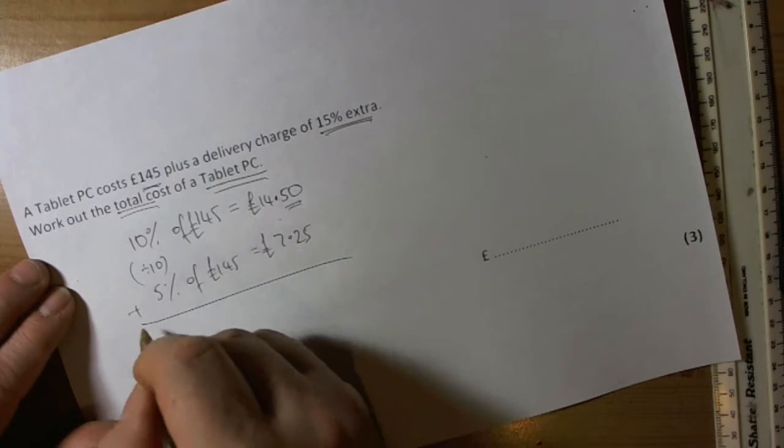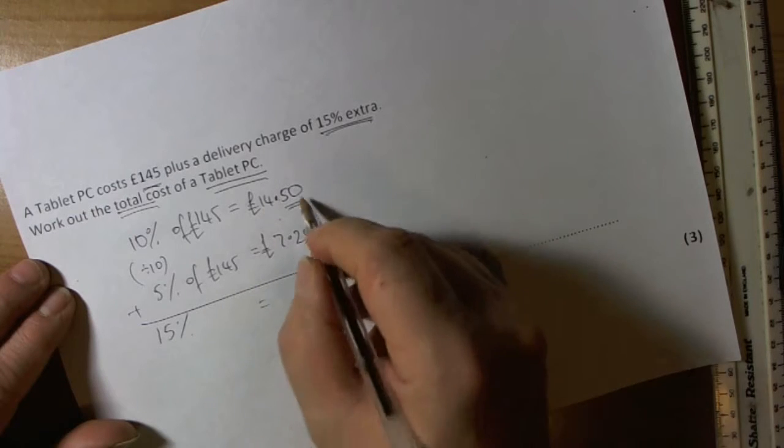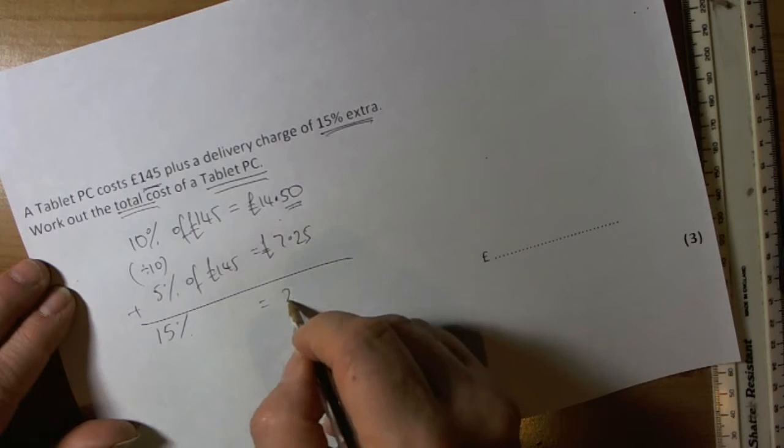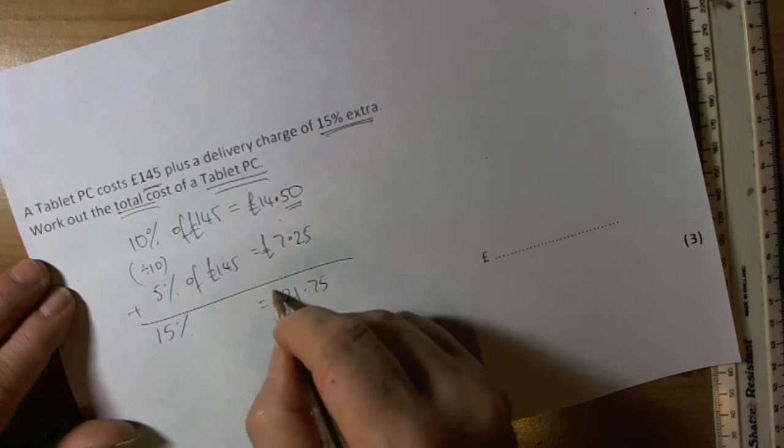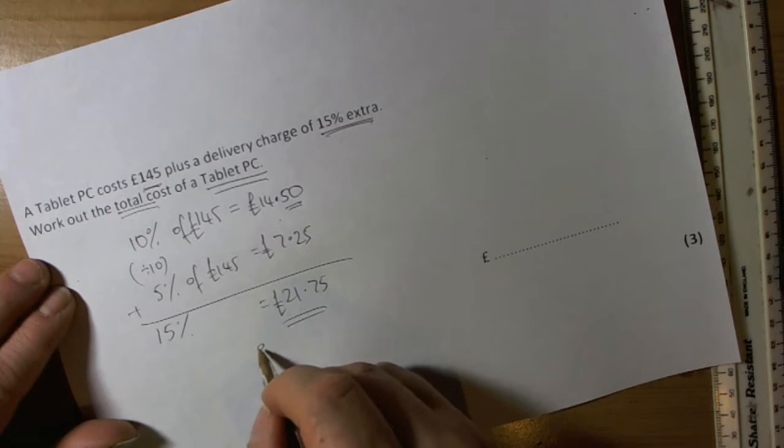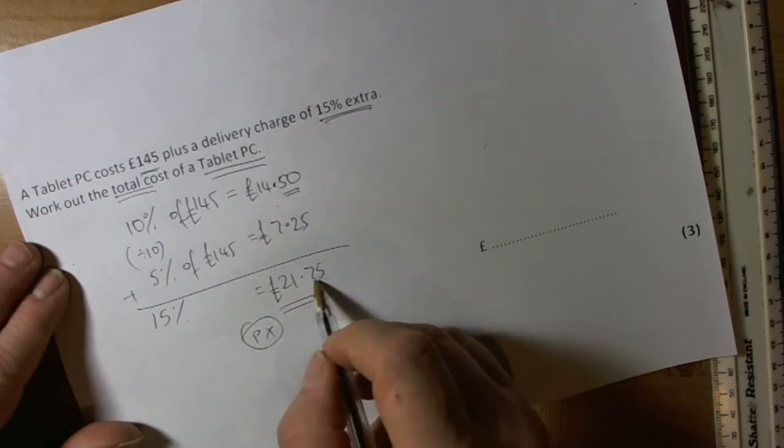So 15% is when we add those together. We're going to add these two up: 14 plus 7 is 21, 50 plus 25 is 75. Notice we don't put the P on the end because we're talking about money, so we only have a pound sign at the front.